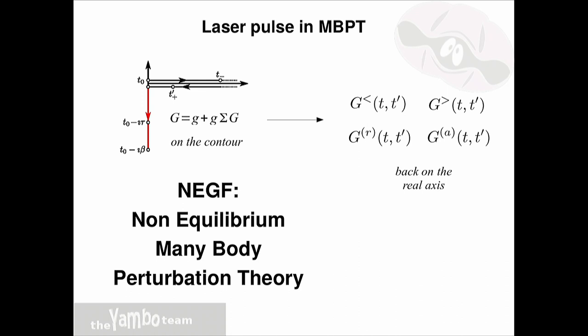As far as many-body perturbation theory is concerned, you can still write a Dyson equation, for example, for the Green function. It is exactly the same Dyson equation as before, but this time the Green function is defined not on the standard real-time axis, but on the Keldysh contour in time. The consequence is that when you bring this Green function back to the real axis, you end up with different components: the lesser, the greater, the retarded, and the advanced Green function. The label depends on how the operators defining the Green function are ordered on the contour.